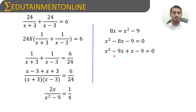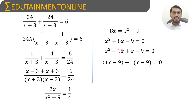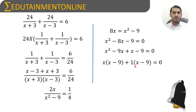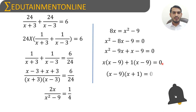From the first two terms, take x common: x(x minus 9). From the last two terms, take 1 common: 1(x minus 9). Both groups share the factor (x minus 9), so factoring gives (x minus 9)(x plus 1) equals zero.